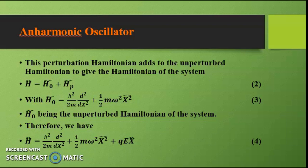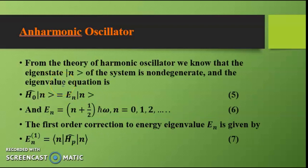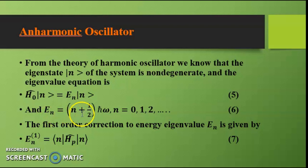Therefore, the full Hamiltonian is H = −(ℏ²/2m)(d²/dx²) + ½mω²x² + qEx. From the theory of the harmonic oscillator, we know that the eigenstate |n⟩ of the system is non-degenerate, and the eigenvalue equation is H0|n⟩ = En|n⟩, where En = (n + ½)ℏω and n takes the values 0, 1, 2, 3, and so on.